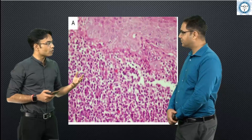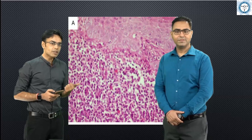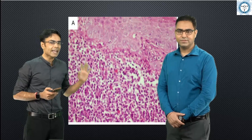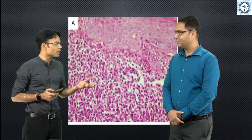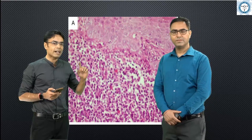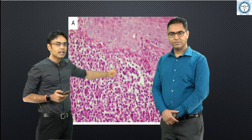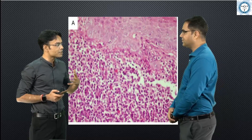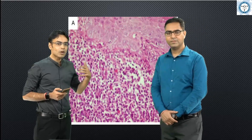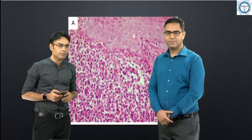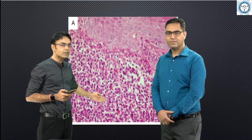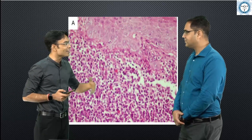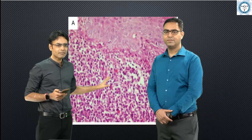We grade rhinoscleroma histologically into three stages. The first stage is a non-specific stage — the catarrhal or atrophic stage — in which we are not finding anything specific. What we are finding are foci of squamous metaplasia. Since rhinoscleroma happens in the nasopharynx, the normal epithelium is pseudostratified ciliated columnar epithelium. Due to continuous injury, there is a change to squamous epithelium with non-specific inflammatory infiltrate. Patients present with rhinorrhea and recurrent rhinitis, and this stage can last for many years.